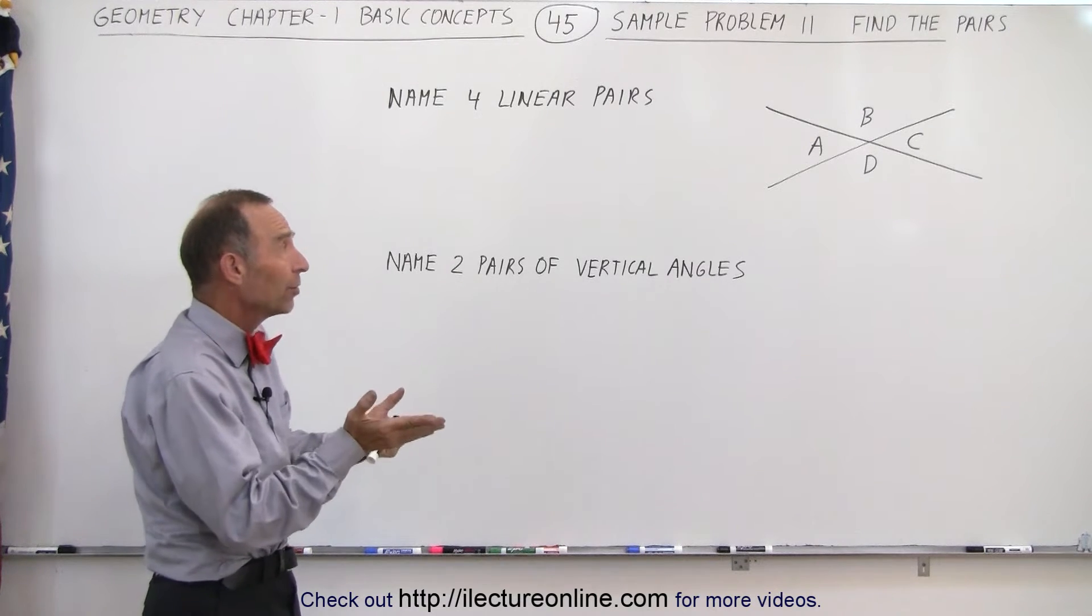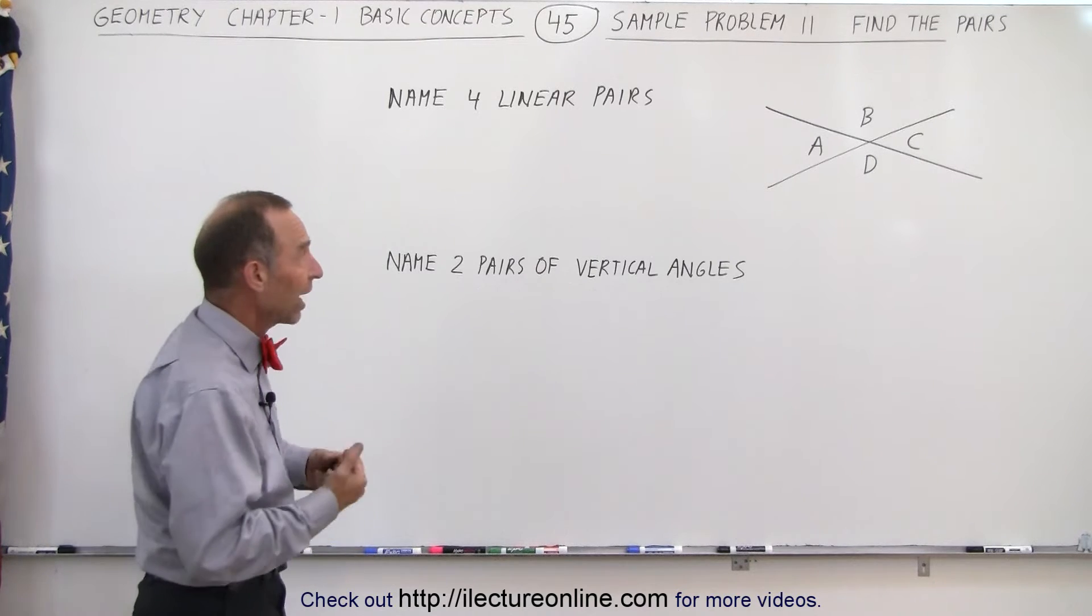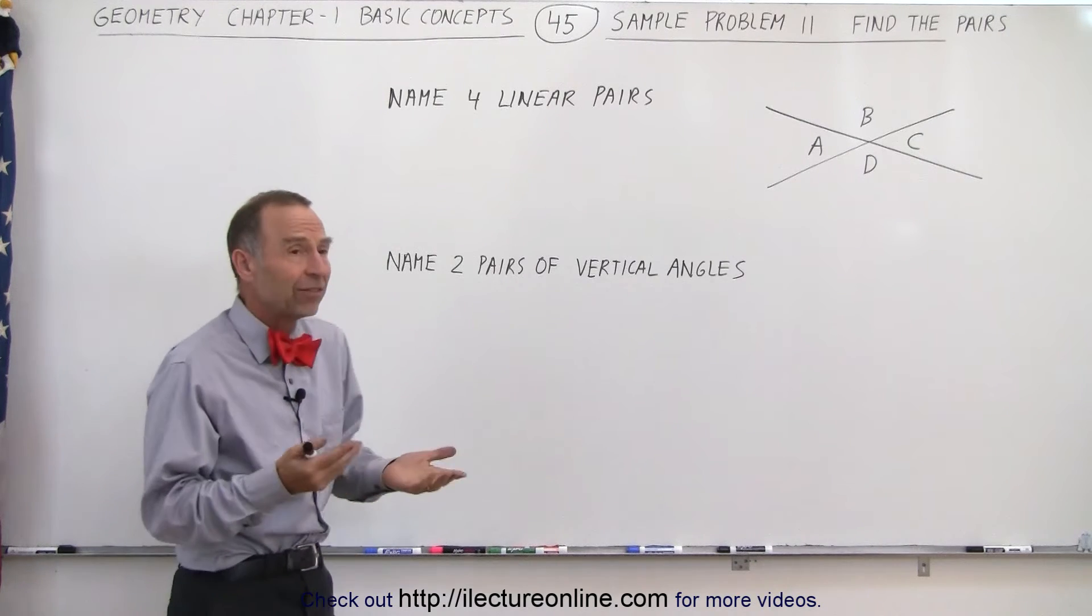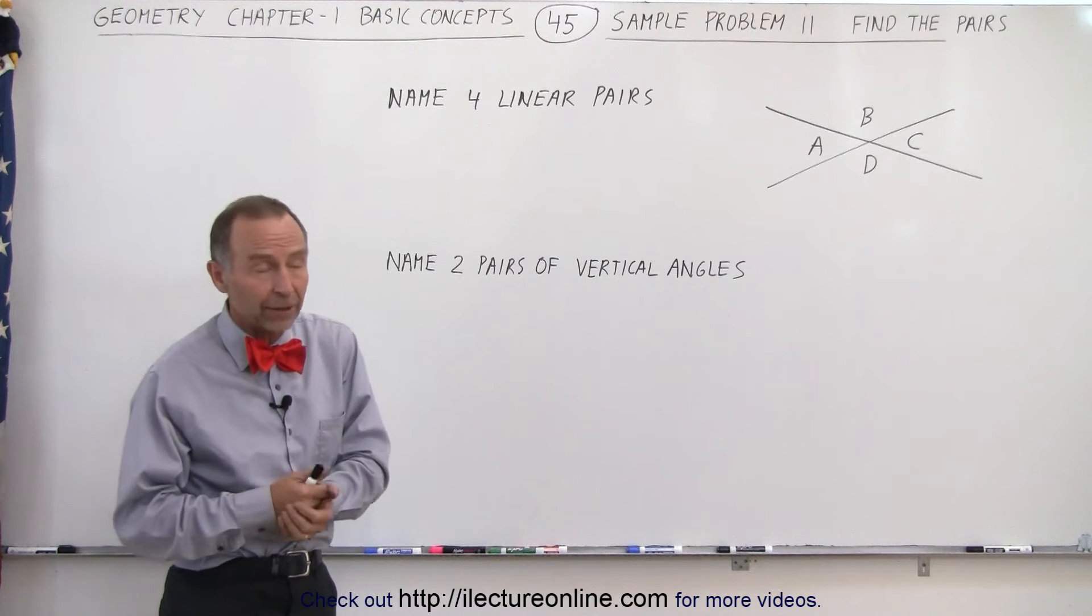Now linear pairs means that the two angles add up to 180 degrees, or I should say the measure of the two angles add up to 180 degrees. So basically a linear pair are angles that are supplementary.